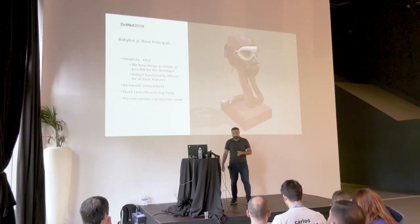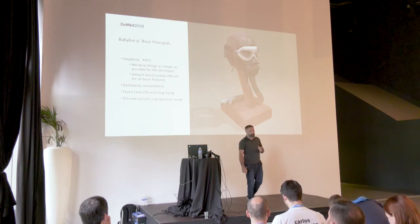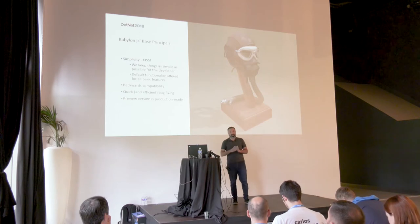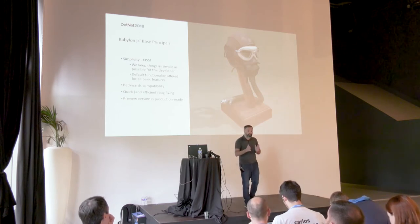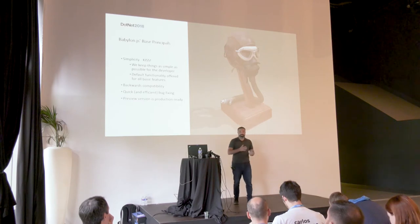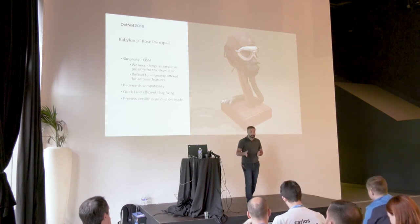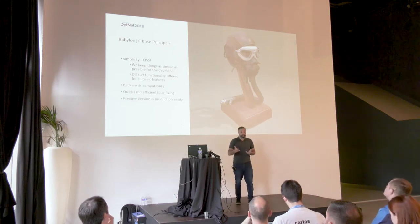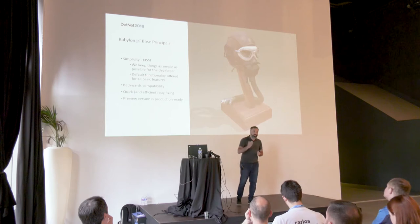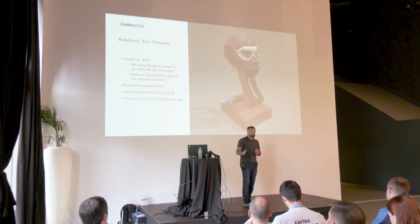The second very important principle is backwards compatibility. We keep public APIs always the same. If we want to change them, we will simply add a new function, but we will never remove one. So code that runs on Babylon 1 will still run on Babylon 3 — just improved because we improved the shaders, for example. But the same code will still run from the first version of Babylon till now.